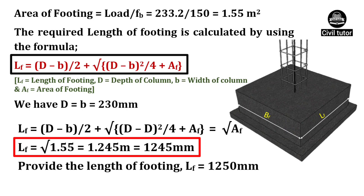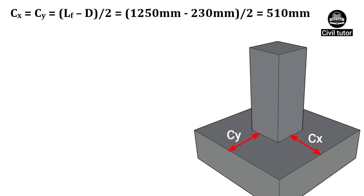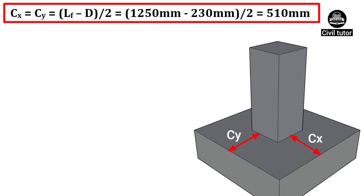Hence, provide the length of footing equal to 1250 mm. The projection of footing for bending about X and Y axis is given by CX = CY = (LF - D)/2, where LF is the length of footing and D is the depth of column. On substituting these values, the projection of footing for bending about X and Y axis will be equal to 510 mm.